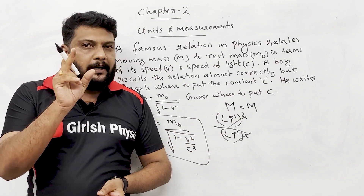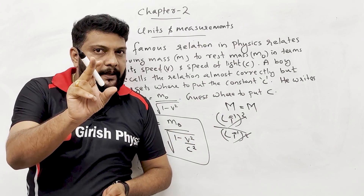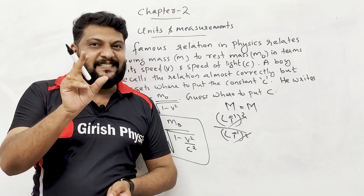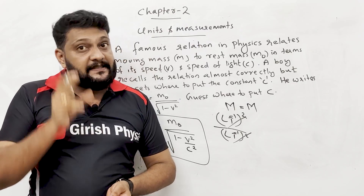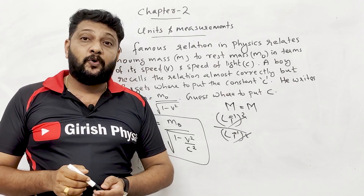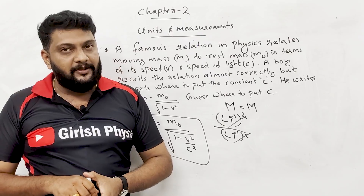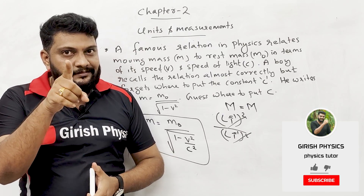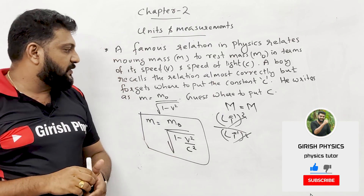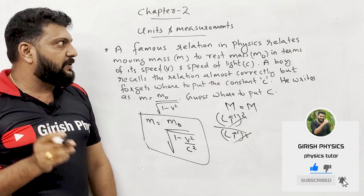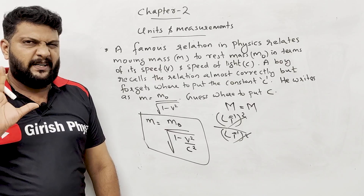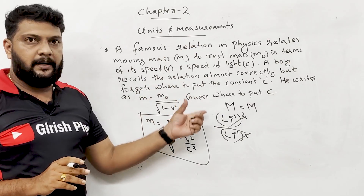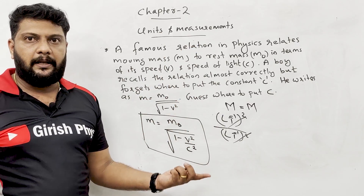Therefore, the correct relation is M = M0 / √(1 − V²/C²). This makes the expression dimensionally consistent since V²/C² is dimensionless.